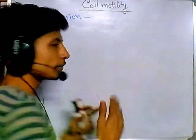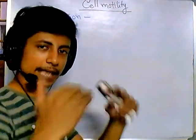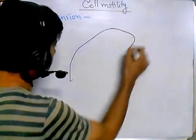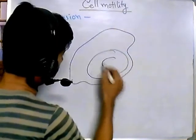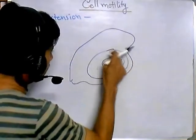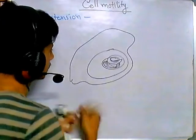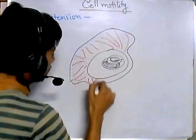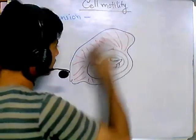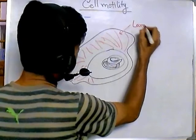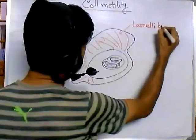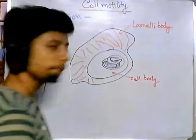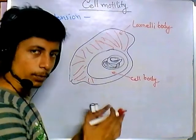Extension refers to the terminal region of the cell, which has an actin filament network. To understand that, you must understand how the cell looks. There is the cell nucleus surrounded by the cell body. The section filled with actin filaments is called the lamellipodia. So there are two different sections of a cell from a motility perspective: the cell body and the lamellipodia.